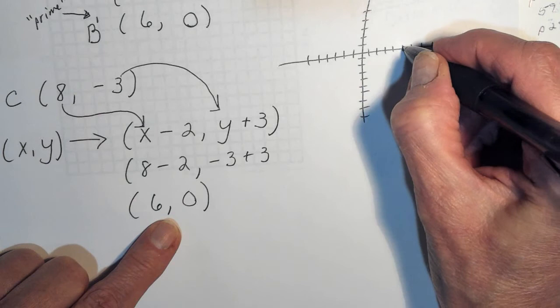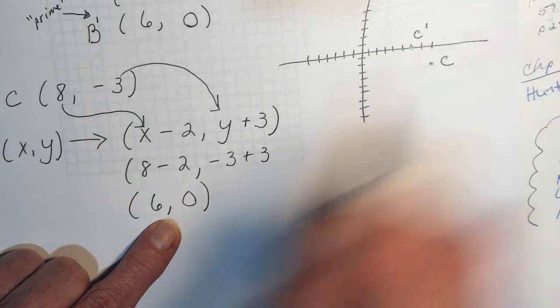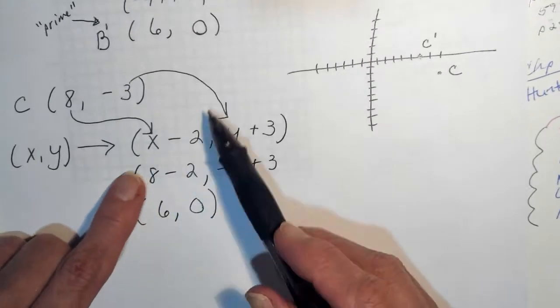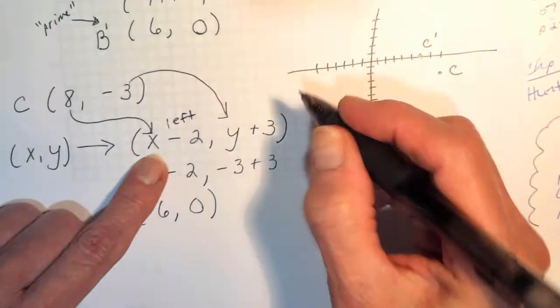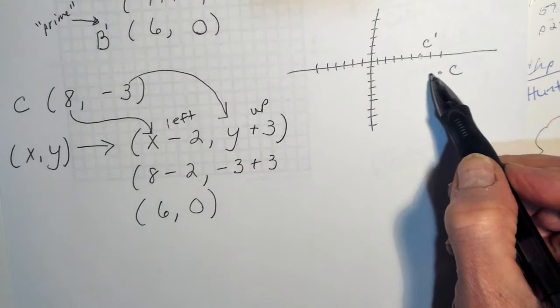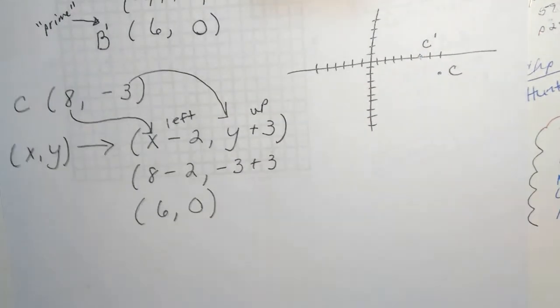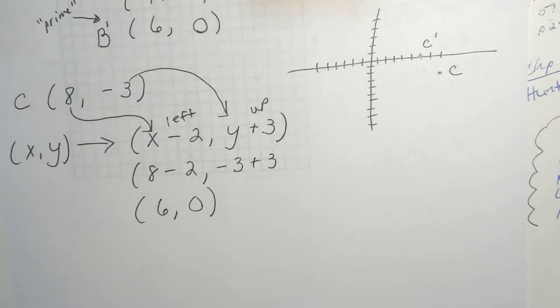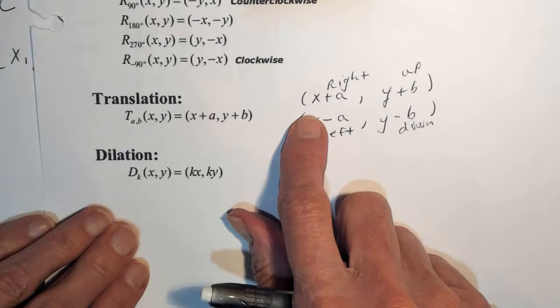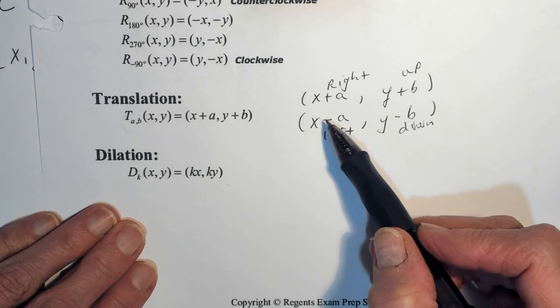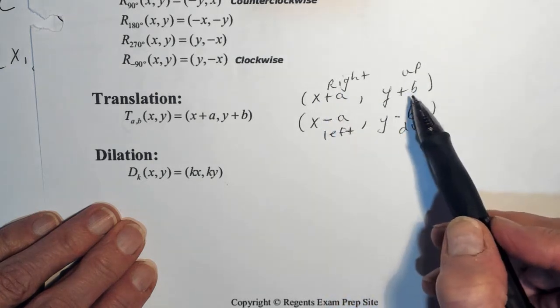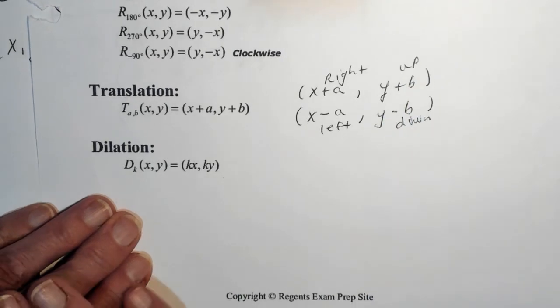C prime is at 6, 0. Now for some of you, you didn't do all of this — you're counting. You know that subtracting means go to the left 2 and adding means up 3. So a lot of you probably just went left 2, up 3. Whatever works for you. On your transformation rule sheet, the translations are right here. Adding to your x value means going right; subtracting means going left. For your y value, adding means go up; subtracting means go down.